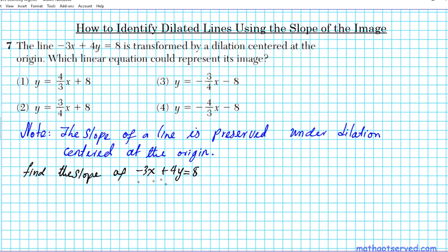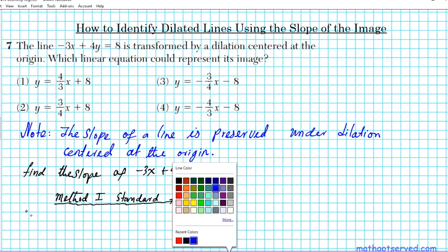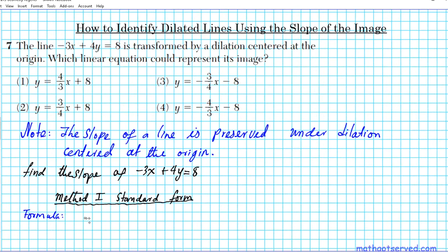There are two ways we can find the slope. Method one involves finding the slope using the standard form. The formula is: the slope M is equal to negative A over B, where we have the form AX plus BY equals C.